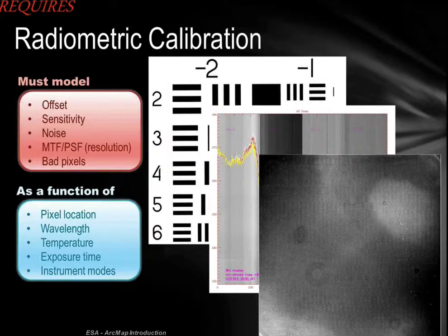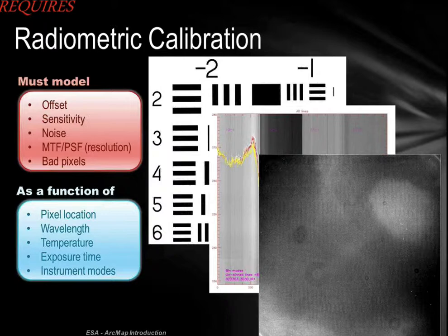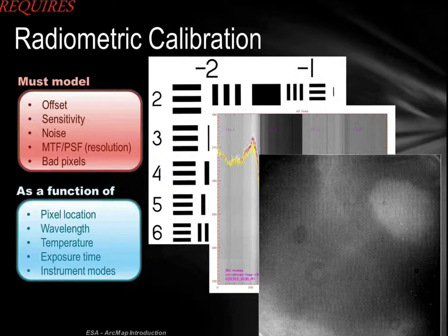GIS requires radiometric calibration. If you don't calibrate the data it won't facilitate science very well, and that includes correcting for noise, bad pixels, wavelengths, temperatures, and exposure times. One of the most difficult challenges we have with Mars is the thermal data — it's taken at all times of day and night. How are you going to integrate those without knowing thermal models and atmospheric corrections? Very tricky.